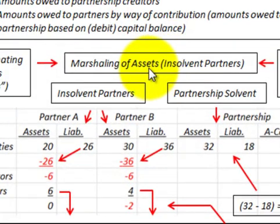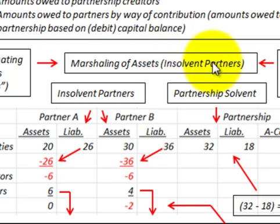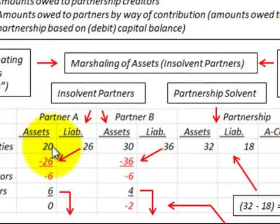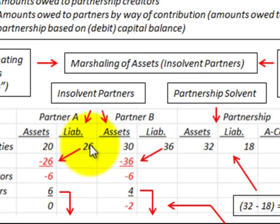For our example, we're going to have marshalling of assets for insolvent partners. We have Partner A and Partner B, and their assets are less than their liabilities, so they have greater liabilities than assets.